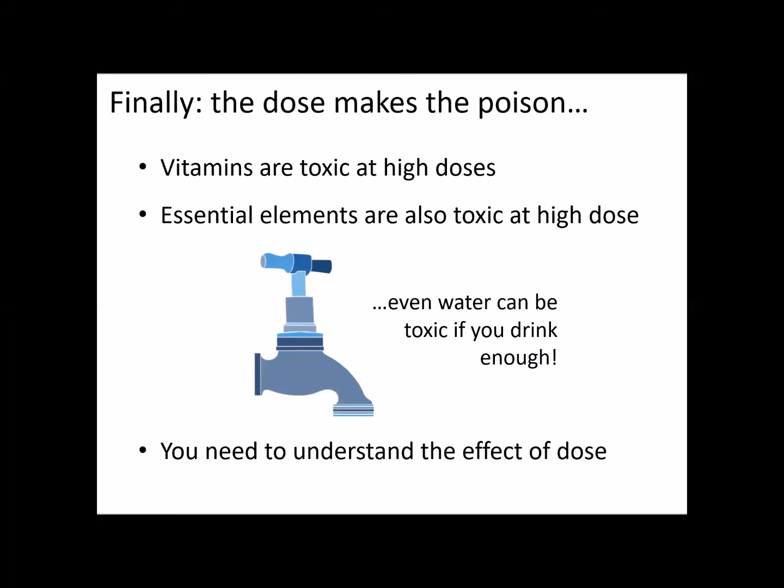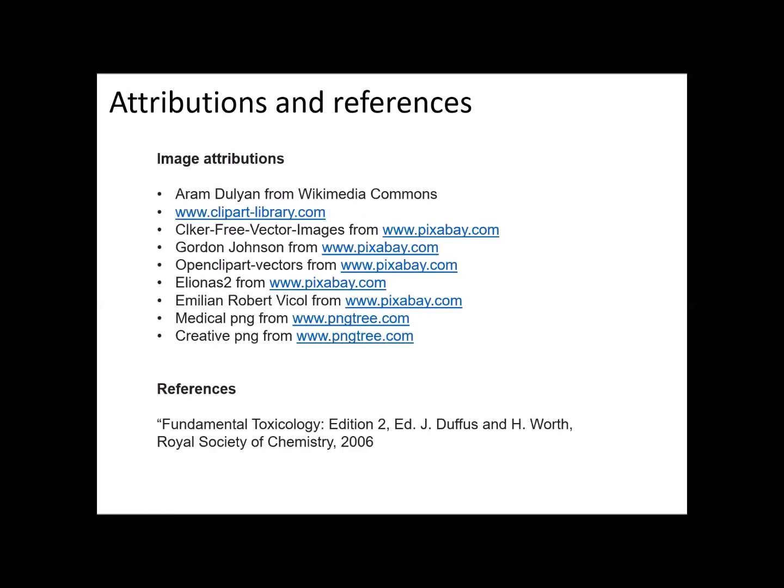A final important point is that the dose makes the poison — this forms the basis of an experiment on the KenBan website. Vitamins are critical to the human body, and there are also essential elements critical for the body to function properly, but both are toxic at really high doses. At small doses they're essential; at high doses they're toxic. Even water can be toxic if you drink enough. Dose is a really important factor when we think about measuring toxicology.